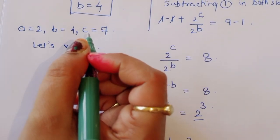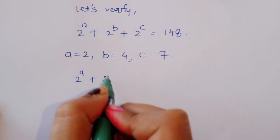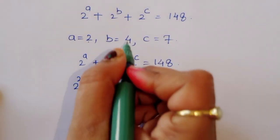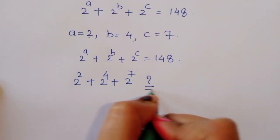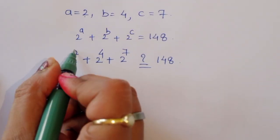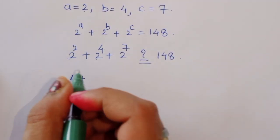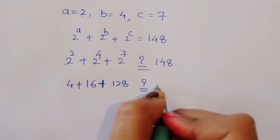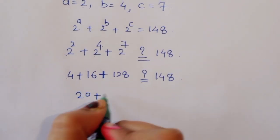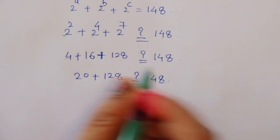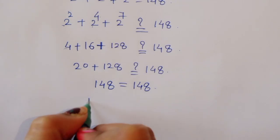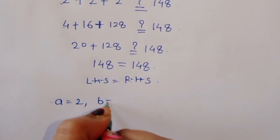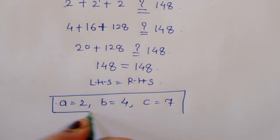Verification: 2 power A plus 2 power B plus 2 power C equals 148. Substituting A equals 2, B equals 4, C equals 7: 2 power 2 plus 2 power 4 plus 2 power 7 equals 4 plus 16 plus 128 equals 148. LHS equals RHS. So the correct solution is A equals 2, B equals 4, and C equals 7. Thank you.